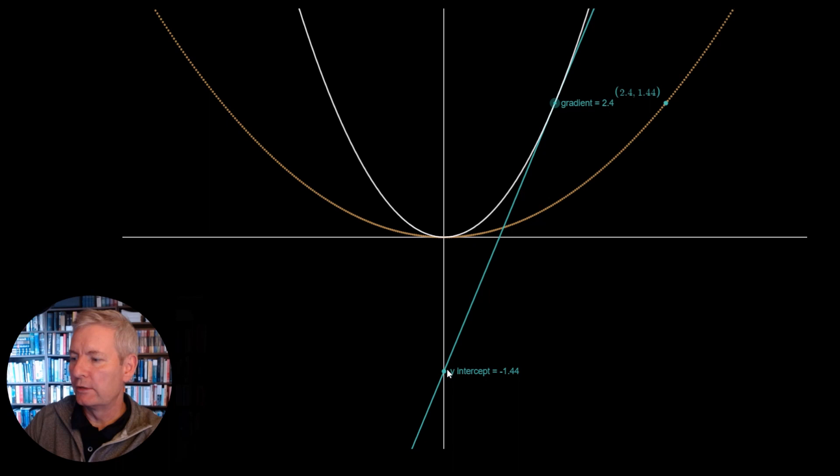But the y-value here, in this instance, has been negated. So the y-value is minus 1.44, but in the Legendre Transform, which we show here, it is plus 1.44.